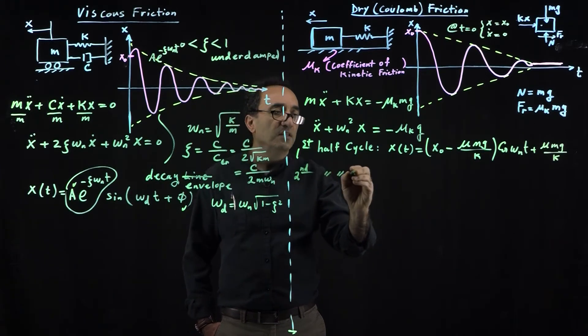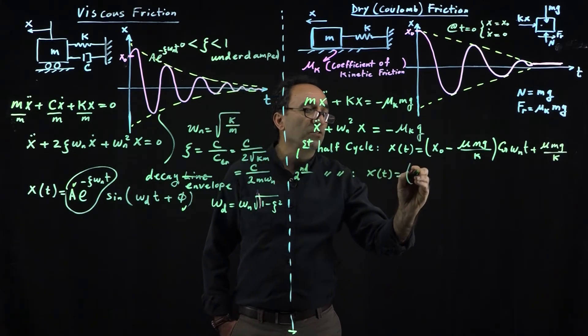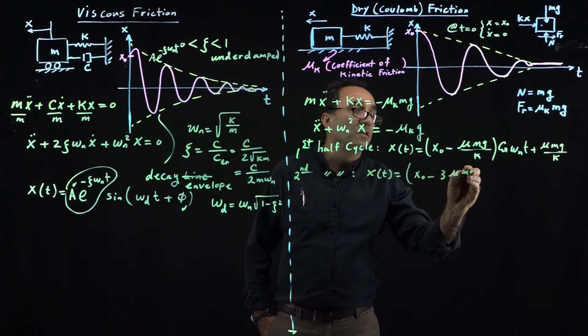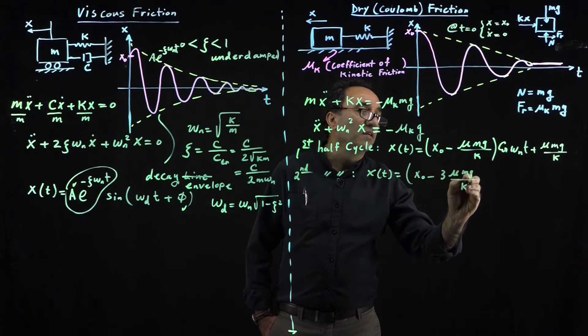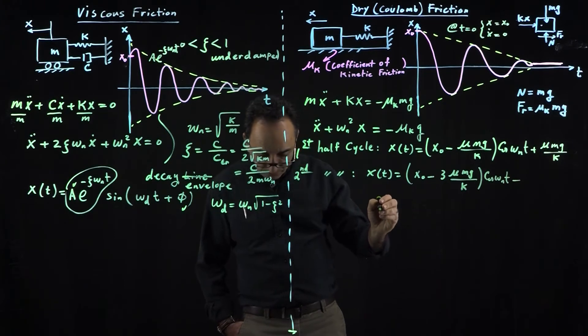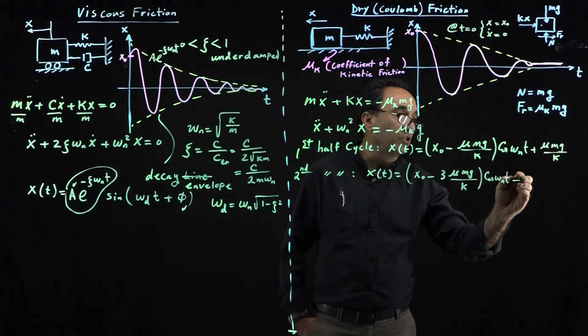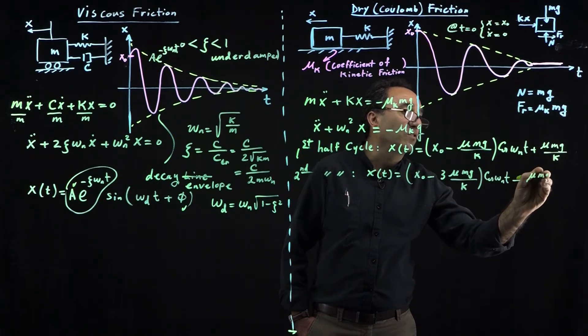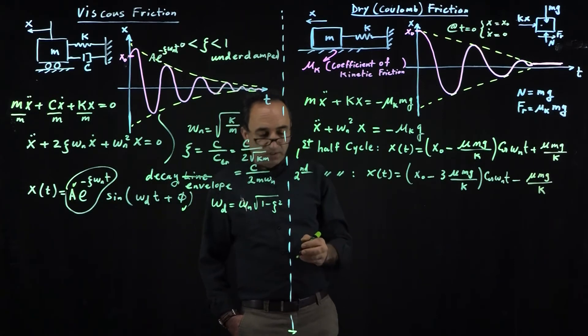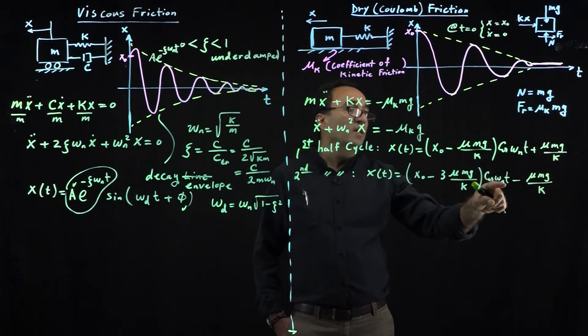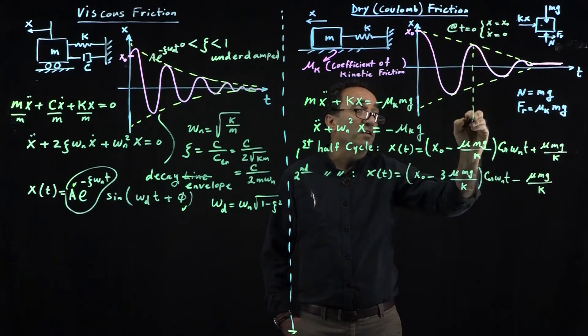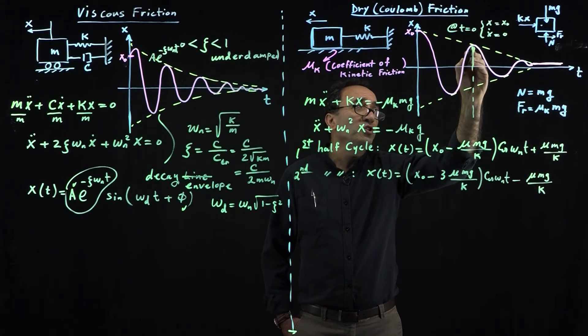For the second half cycle, the equation is a little bit different. You notice we get x_0 minus 3 mu mg over k times cosine(omega_n t) plus—in this case, I'm sorry—minus mu mg. The difference with the first half cycle is that you get a negative.